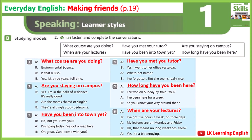Five: How long have you been here? I arrived on Sunday by train. You? I've been here for a week. So you know your way around then. Six: When are your lectures? I've got five hours a week on three days. My lectures are on Monday and Friday. Oh, that means no long weekends for you then. Yes, it's a bit annoying.